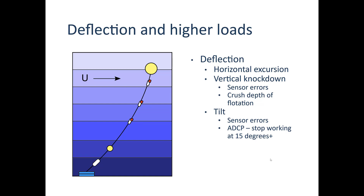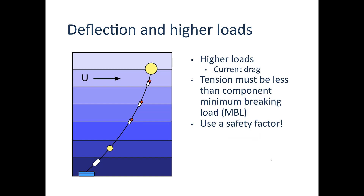The mooring will tilt as well, causing more sensor errors. ADCPs in particular stop providing reliable data collection at tilt angles greater than 15 degrees. There will also be higher loads from drag on the mooring. You need to check what the tensions are in the components and compare them to the minimum breaking load of the components — or at minimum the working load limit.